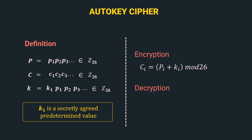Let's look at the decryption algorithm. The decryption algorithm is: pi = ci − ki mod 26. Similar to the encryption algorithm, for generating the ith character of the plain text, we require both the ith character of the ciphertext and the ith character of the key stream. For p1, we require c1 − k1 mod 26, and for p2, we do c2 − p1 mod 26, and so on. This was the mathematical definition of the auto-key cipher.